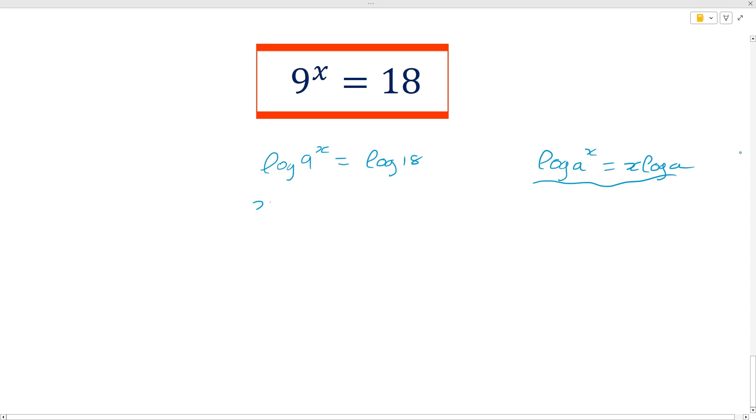So we have x log 9 which is equal to log of 18. And here the next step could be to say, well, okay, we're going to move the log 9 to the other side, so x is equal to log of 18 divided by log of 9.